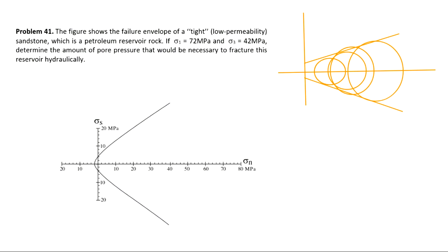You can draw the failure envelope on both sides. If you apply tensile force to tear the rock, sigma 1 is zero and sigma 3 is negative. If the rock breaks under sigma 1 = 0 and sigma 3 = −1 MPa, for example, you can complete the failure envelope on the tensile side as well. Now you know how the failure envelope is constructed.